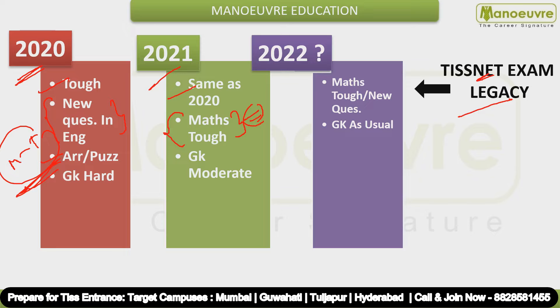Looking at the 2020–2021 difficulty level trend, Maths is again expected to be tough in 2022, and you can expect new type questions as well.